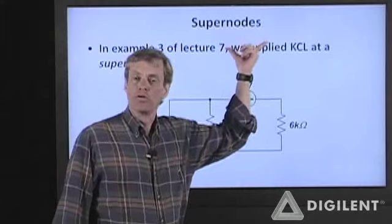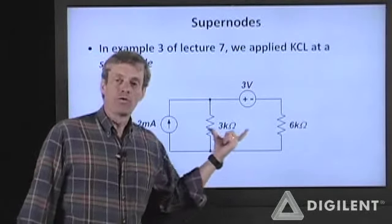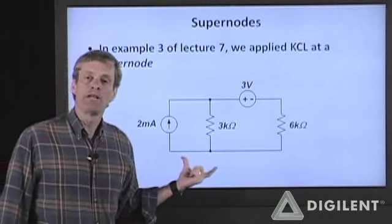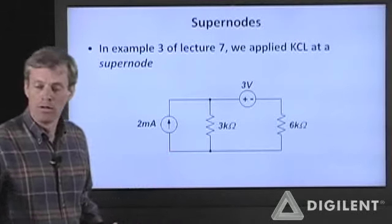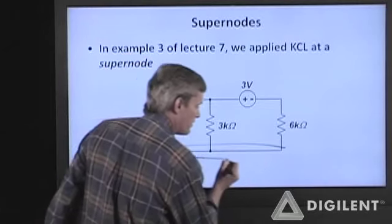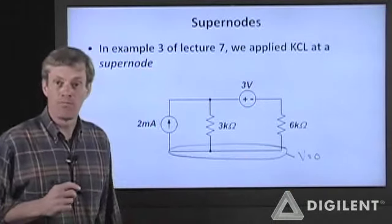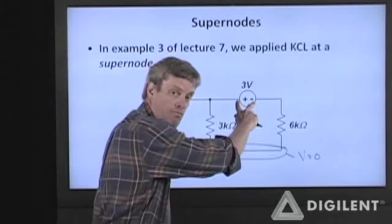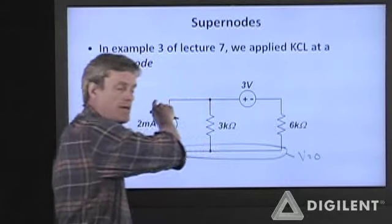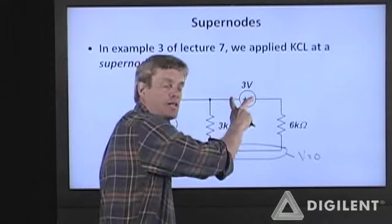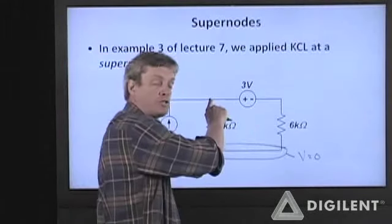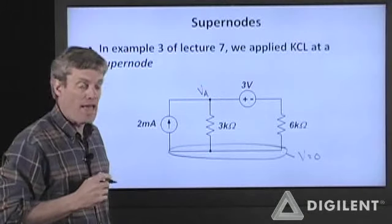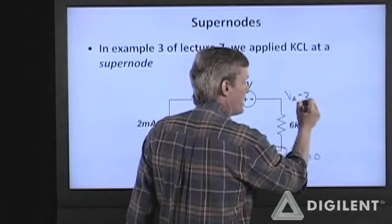Now I want to go back and talk about supernodes. At the end of the last lecture, I did an example in which I invoked supernodes to solve the problem. I want to revisit that now. I chose the node at the bottom to be the reference voltage, assigned that to V equals zero. Then I killed the sources, open-circuited the current source, short-circuited the voltage source. That indicated I had one independent node. This voltage source causes a constraint between two nodes — whatever voltage V sub A is, the other node has to be three volts below that, so V sub A minus three volts.